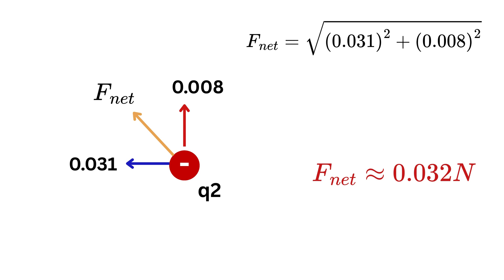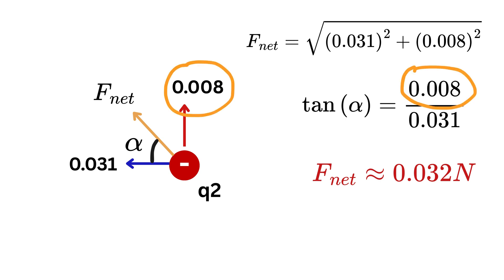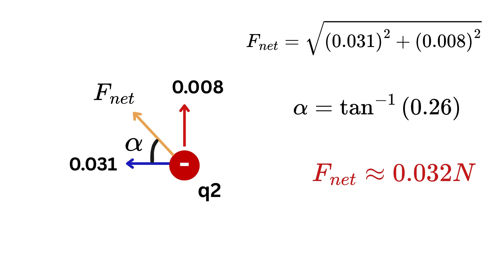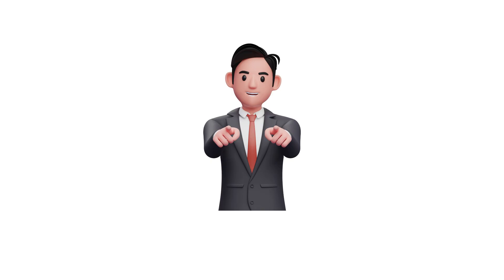We can also find the angle alpha that this net force makes with the x-axis. Using trigonometry: tan(alpha) = y-component / x-component. So alpha = tan⁻¹(0.26) ≈ 14.5 degrees.